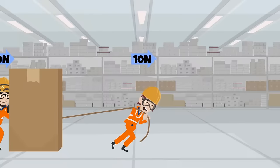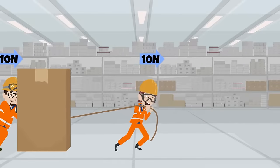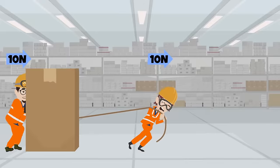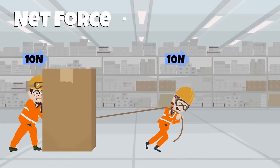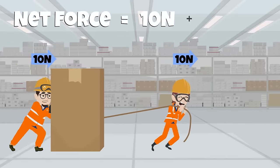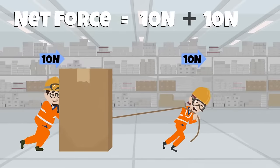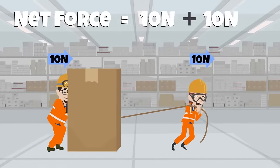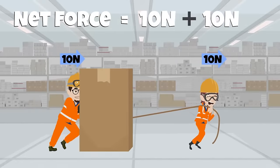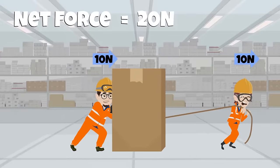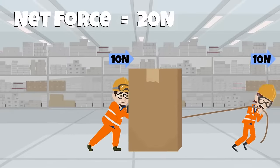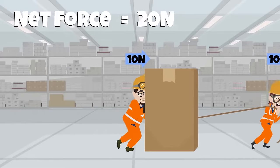When two or more forces act in the same direction on an object, the net force is calculated by adding the forces. As the object moves in the direction of the net force, its speed increases.